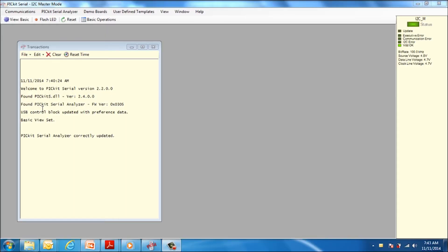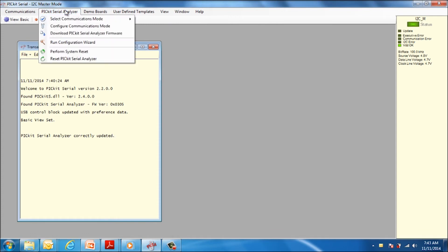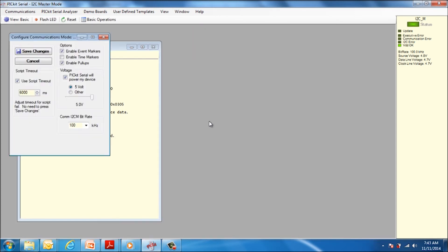Now we need to configure the PICTEL to communicate with the MCP47X6 PICTEL. In the upper left, you will need to click on the PICTEL Serial Analyzer tab. From the drop-down menu, select Select Communications Mode, then select I2C Master. Now click on the PICTEL Serial Analyzer tab again, but this time select Configure Communications Mode. This will open a new window. Ensure the configuration is the same as what is on the screen.